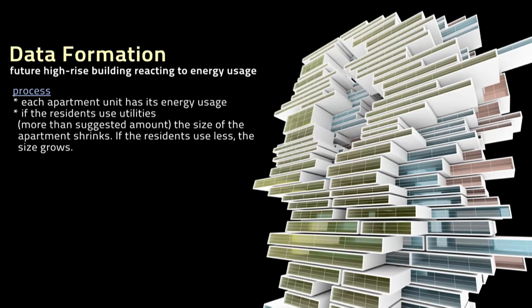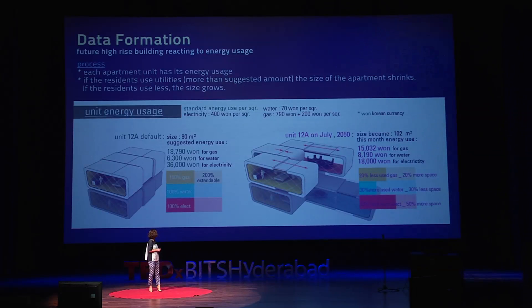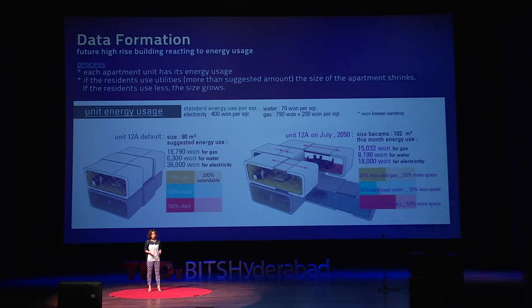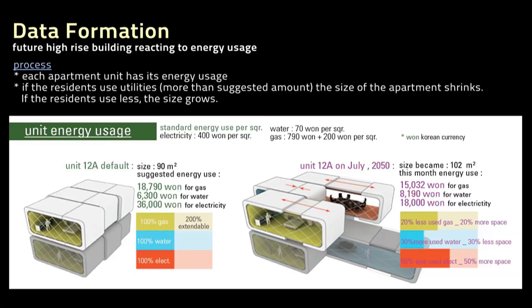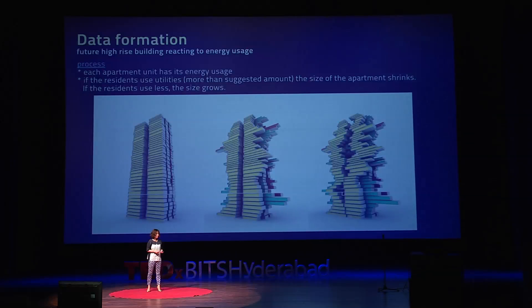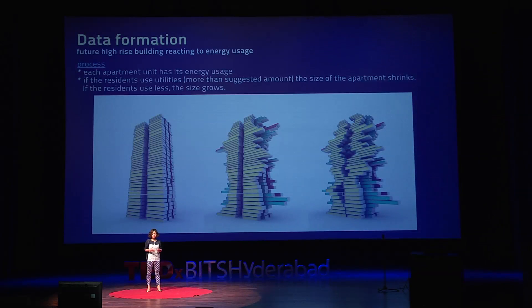This picture shows how each unit changes. The left picture shows 90 square meters as a default, which means no energy has been used. But a month later, if the residents start to use energy — gas, water, and electricity — the apartment changes depending on the consumption of energy usage. In this case, the apartment increased in size up to 102 square meters. And the entire building will be reshaped. The very first left form is straightforward, meaning no energy has been used, but as people start to use the utility, the building will be reshaped differently each season and each month.